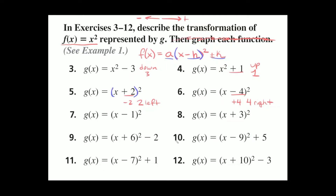Let's jump down to 9 and 10. In problem 9 we have two different transformations going on — we're moving it side to side and also up and down. Side to side, taking the opposite number, we get negative 6, so we're moving it 6 spaces to the left. And negative 2 at the end means we're moving it 2 spaces down.